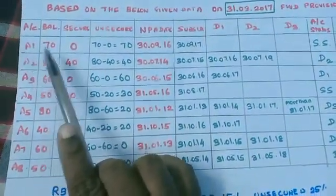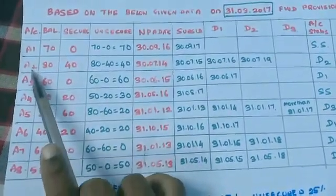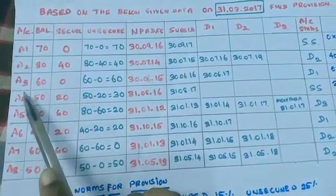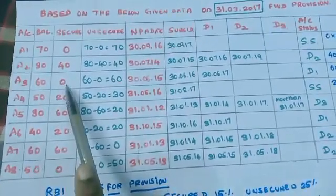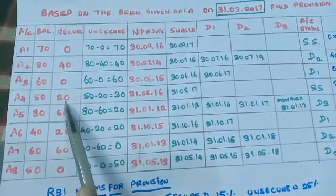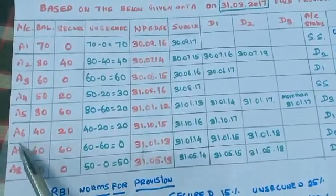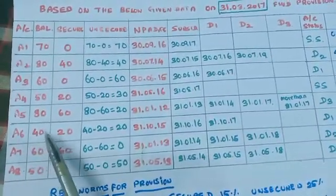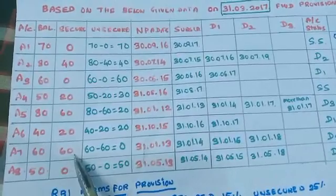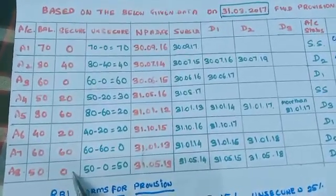Account A1 has a balance of 70, in which secured portion is 0. A2 has balance of 80 crore and secured portion is 40. A3 balance is 60, secured portion is 0. A4 balance is 50, secured portion is 20. A5 balance is 80 and secured portion is 60. A6 balance is 40 and secured portion is 20. A7 balance is 60 and secured portion is 60. A8 balance is 50 and secured portion is 0.